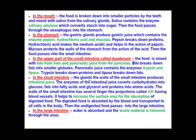From the upper part of the small intestine, food moves to the lower part, where the walls of the small intestine release intestinal juice, also known as succus entericus. The enzymes of this intestinal juice convert carbohydrates into glucose, fats into fatty acids and glycerol, and proteins into amino acids. The small intestine is the site where complete digestion of food occurs.